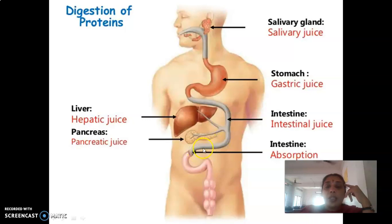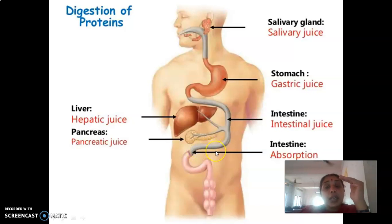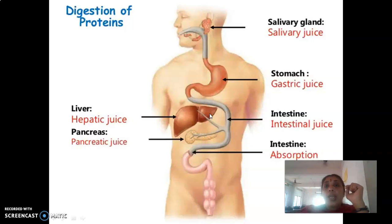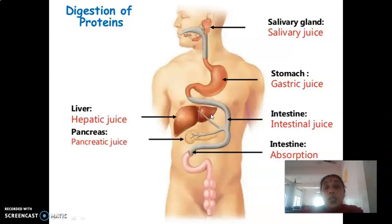In the intestinal lumen, on the interior side, there are mucosal cells — the enterocytes. The enterocytes contain the intestinal juice, and within the intestinal juice there is an enzyme known as enteropeptidase, which causes the activation of trypsinogen to trypsin. The optimum pH at which enteropeptidase acts on trypsinogen is between 5.2 to 6.